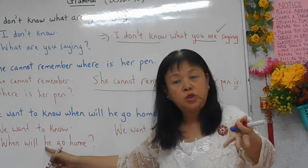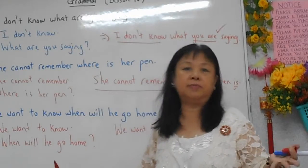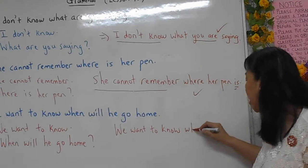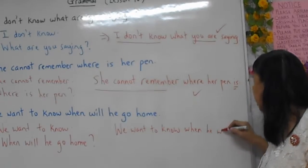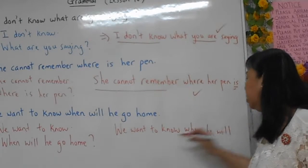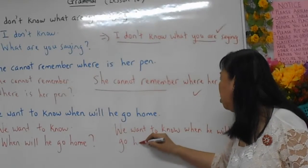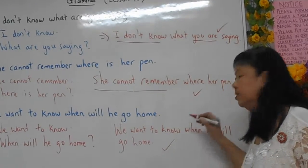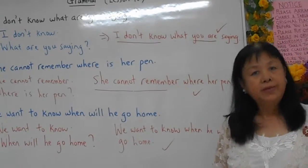'Will he?' is a question. 'He will' is a statement. Therefore, the answer is: 'When he will go home.' This is the correct answer.